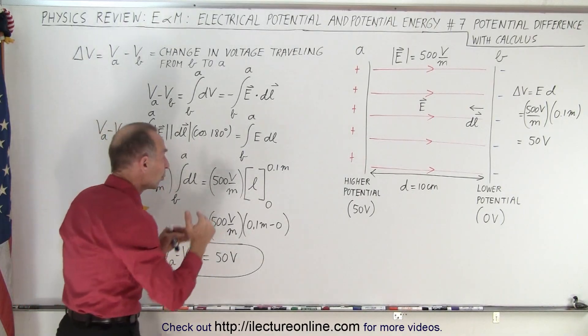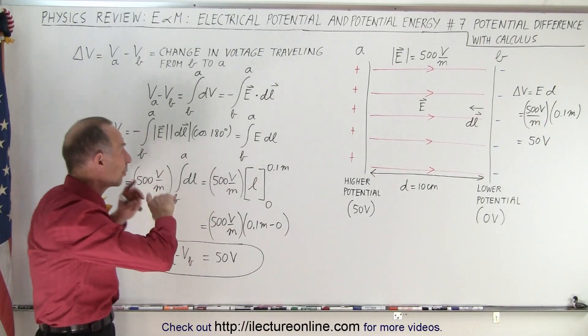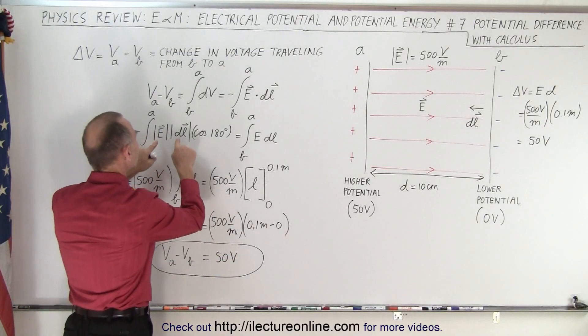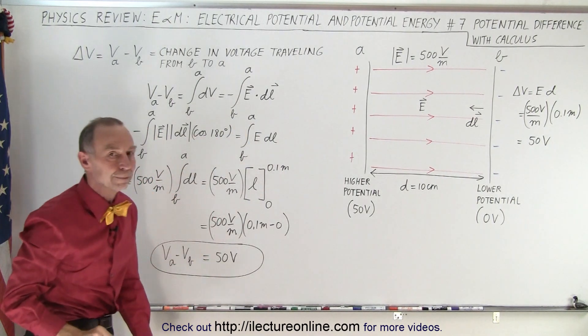So we're looking for the magnitude of the distance, not the direction of the distance, because we already took care of that by doing the dot product and converting this into the magnitude of these two with the cosine of the angle between them.